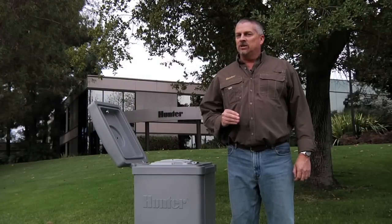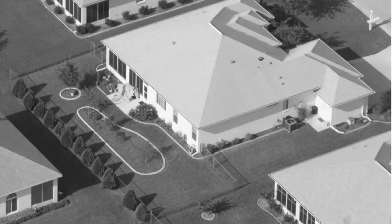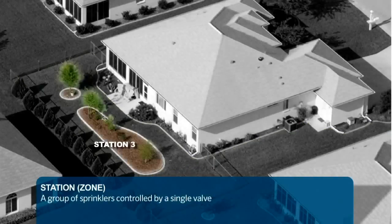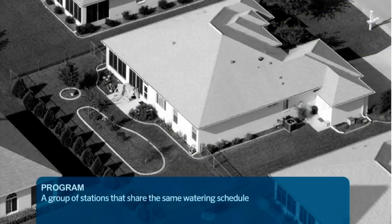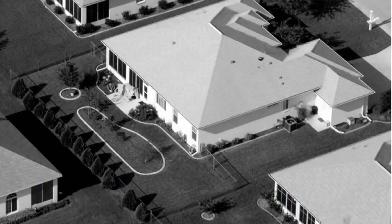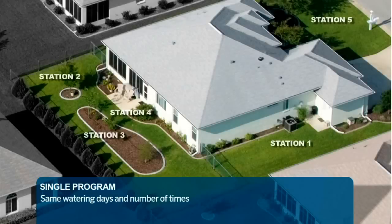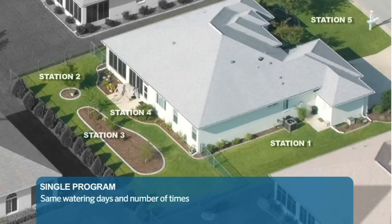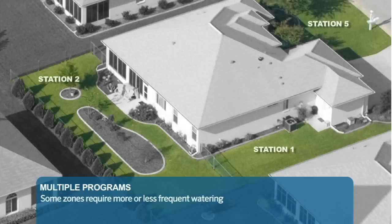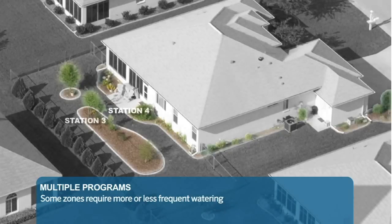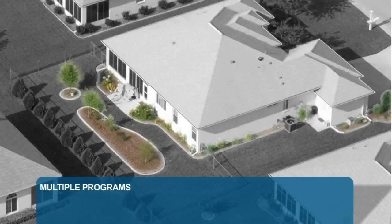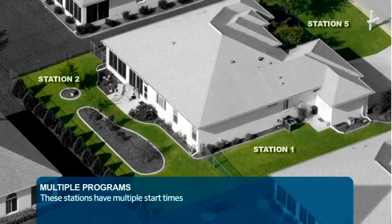Before programming our watering schedule, let's review some terminology. A station is a group of sprinklers that are controlled by a single valve — a station is also known as a zone. A program is a group of stations that share the same watering schedule, and by schedule we mean the days of the week on which the program will run. If all of your stations will be watering the same days and the same number of times a day, then you can program all your stations in the same program. However, if some of your zones need to be watered more or less frequently than others, then you will need to separate them into multiple programs so they can have different day schedules. Another reason would be if some of your zones need to be watered only once a day and other zones need multiple times a day.